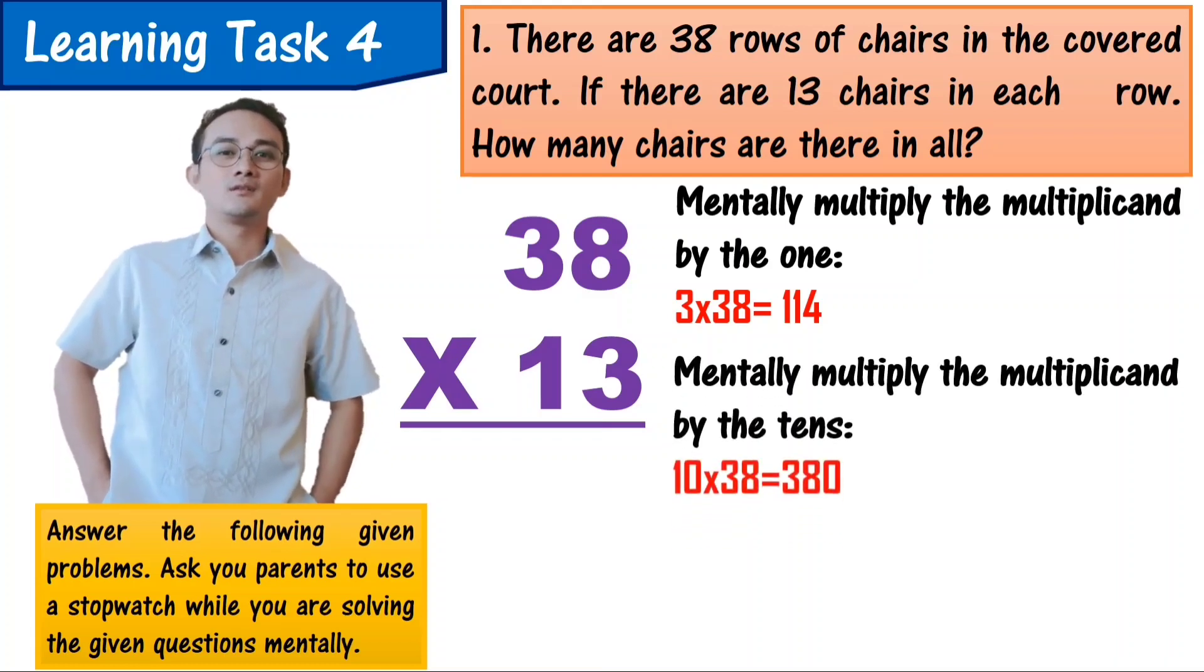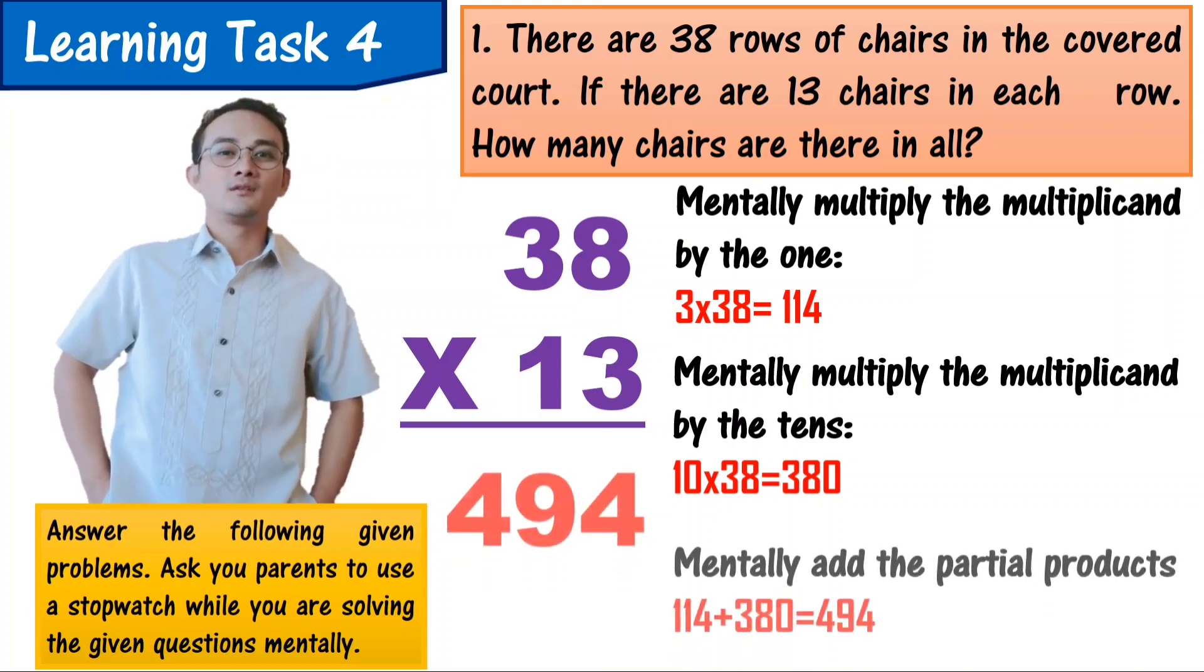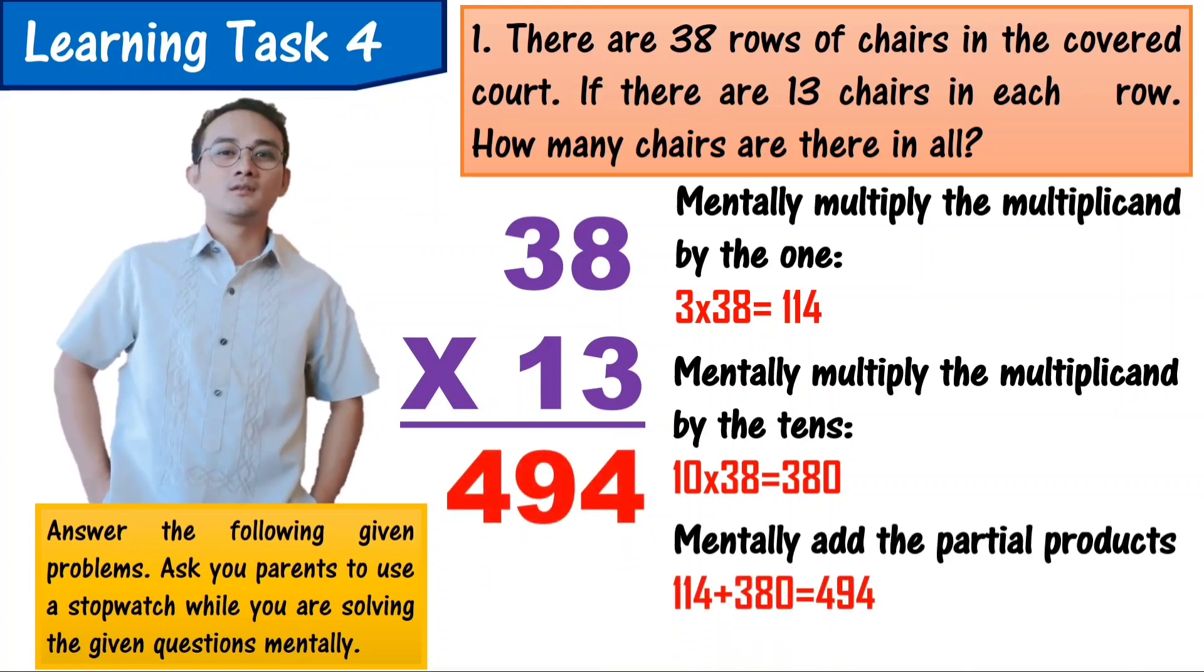The second step is mentally multiply the multiplicand which is 38 by the tens of the multiplier which is 1. 10 times 38 equals 380. And for the last step, mentally add the partial products: 114 plus 380 equals 494.